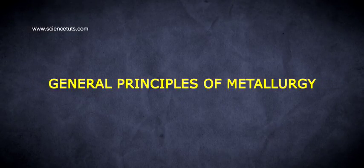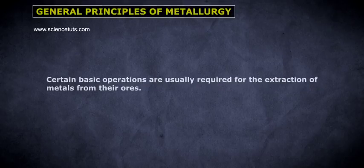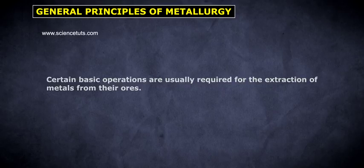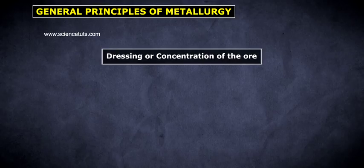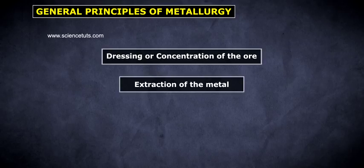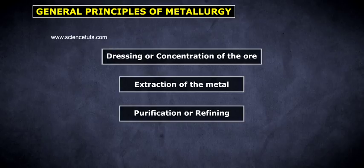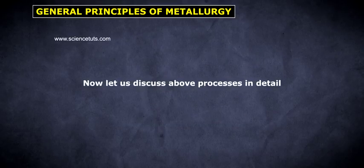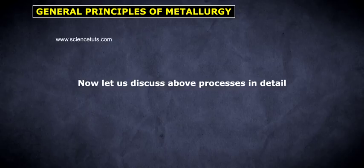General Principles of Metallurgy. Certain basic operations are usually required for the extraction of metals from their ores. They are: dressing or concentration of the ores, extraction of the metal, and purification or refining. Now let us discuss the above processes in detail.